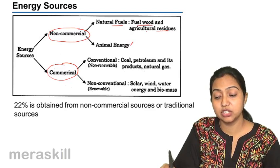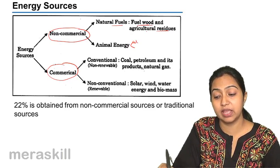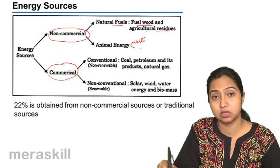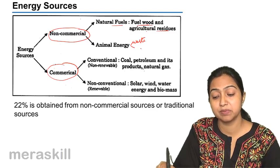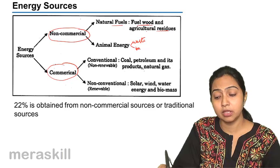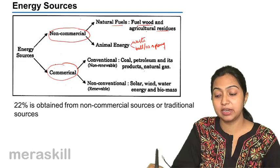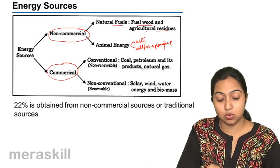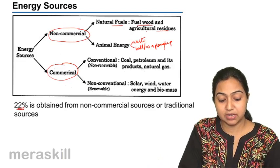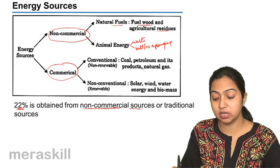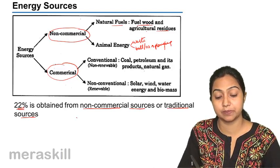Then animal energy is also used — animal waste is used in the form of dung cakes and all, which is used for cooking purposes. And then people use bulls and oxen for plowing, so they use animal energy for that purpose also. The 22% of the population uses these non-commercial or traditional sources of energy.